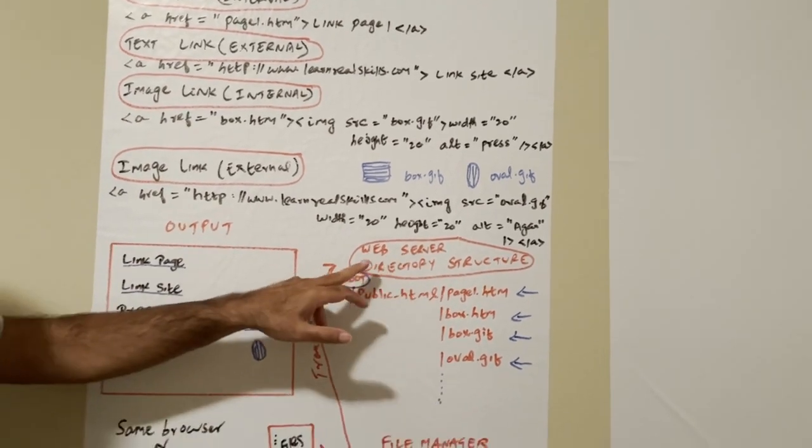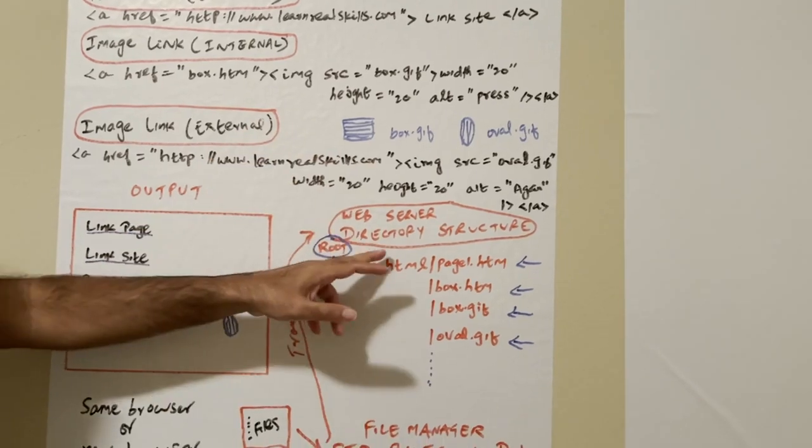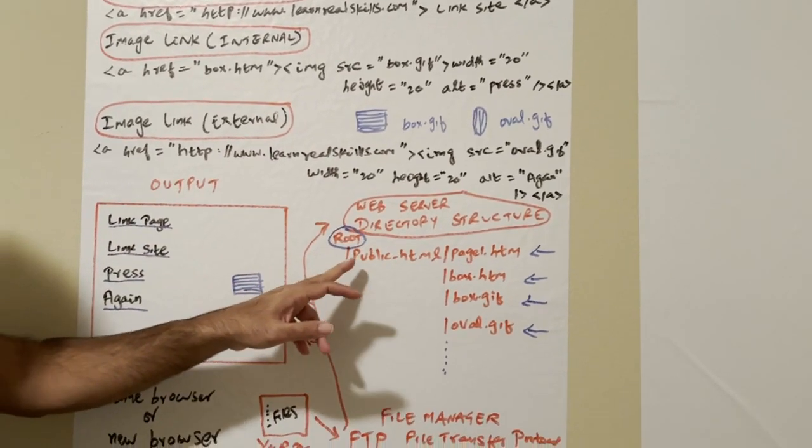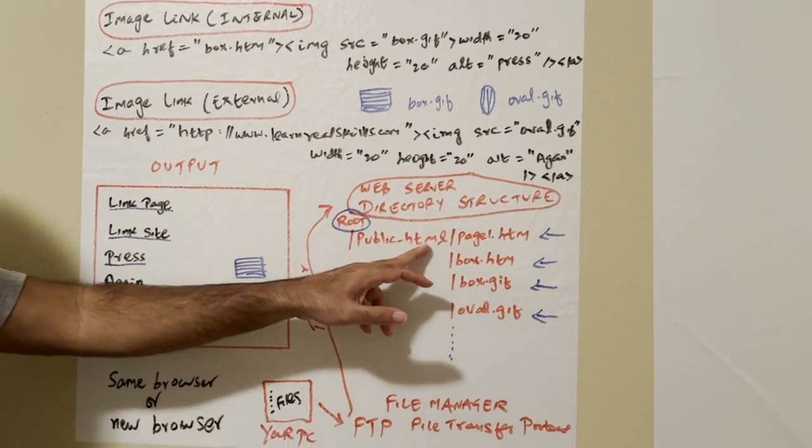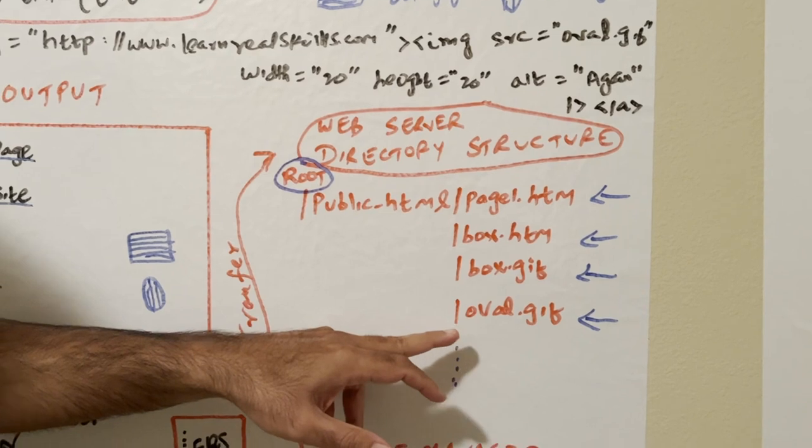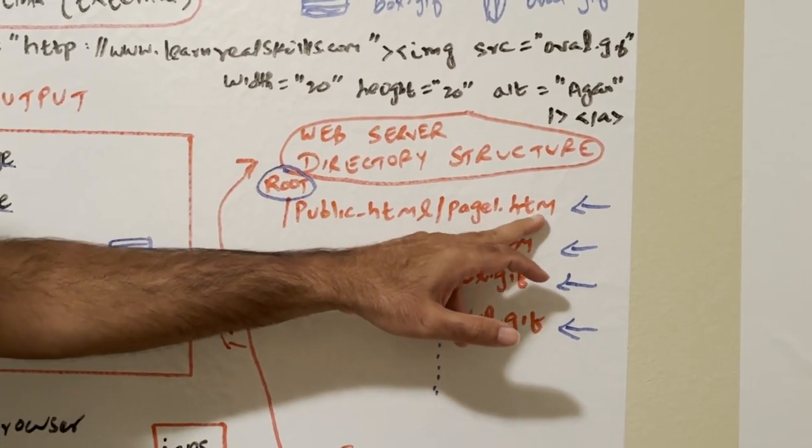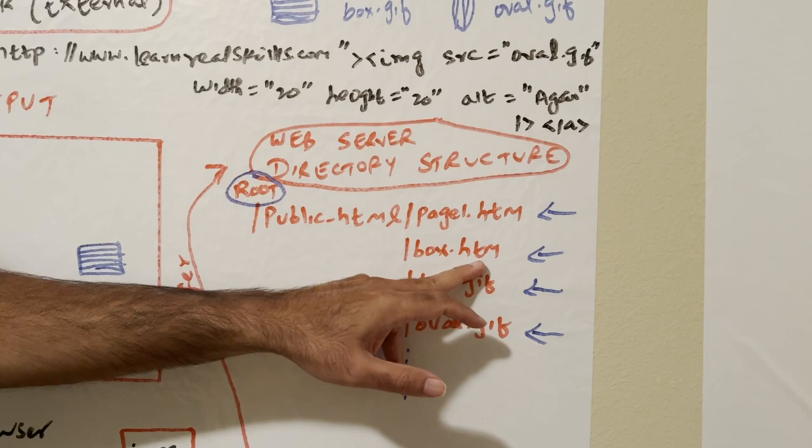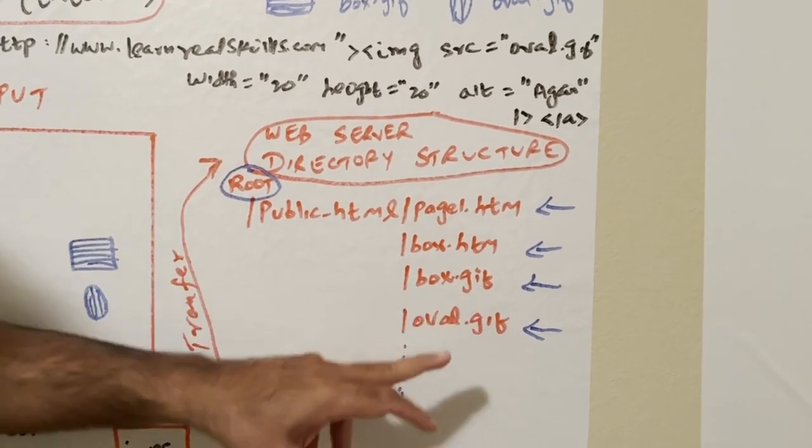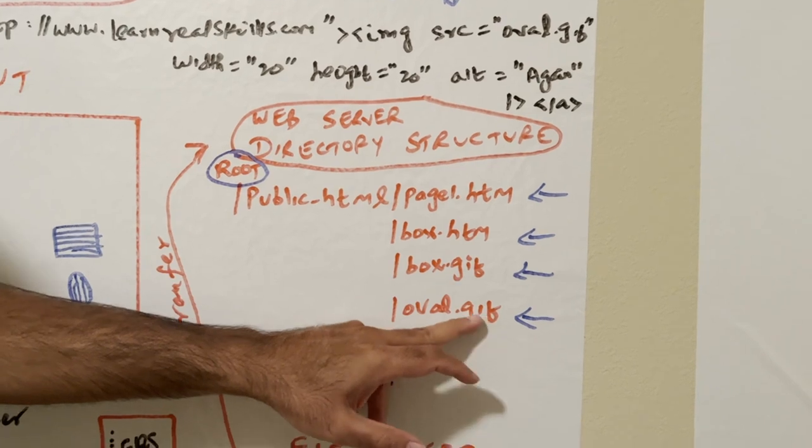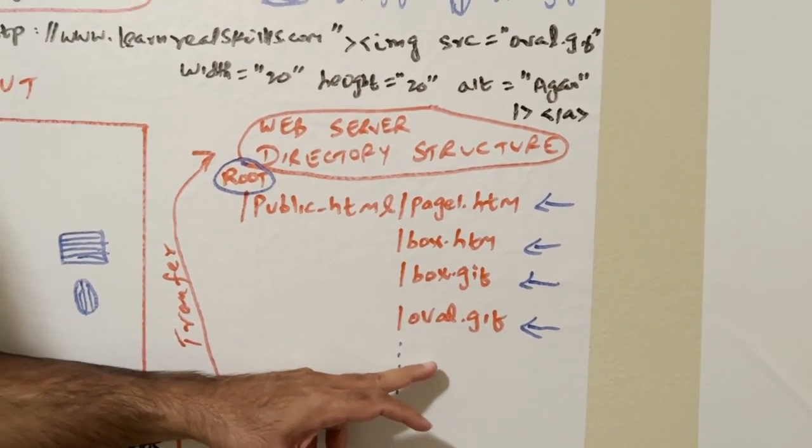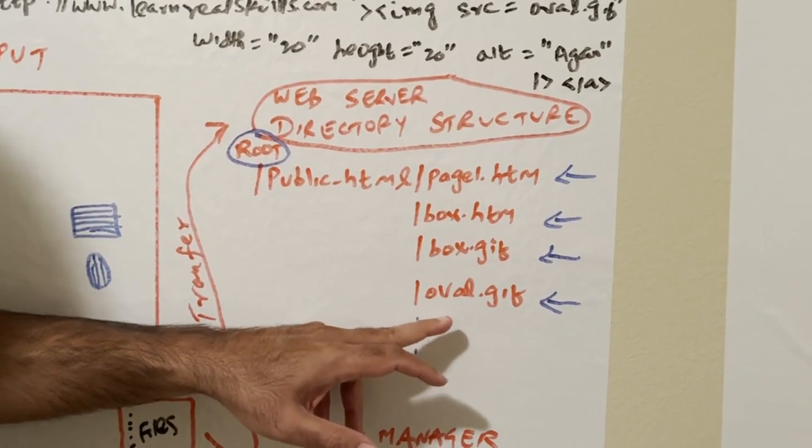See here, this is the web server. Website is hosted here. Any website directory structure: root level, slash public underscore HTML. This is the folder where all the files will be listed. Page1.htm means HTML file, box.htm HTML file, box.gif image file, oval.gif image file, PHP files .php, .xhtml, .js JavaScript files, all will be on this folder public underscore HTML.